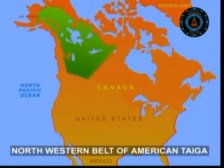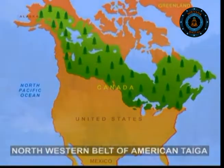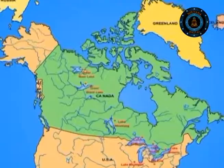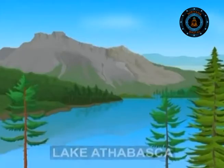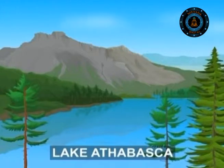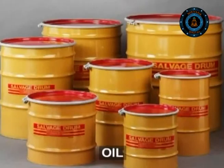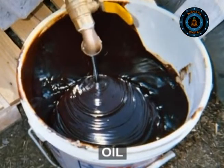Coming to the north-western belt of the American Taiga, we find this place full of forests, lakes and rivers. Canada, which is in this region, has more lakes than any other country. Lake Athabasca in Canada has the largest deposits of tar, oil and other useful substances. The oil workers here clear the sandy soil to extract these required substances.